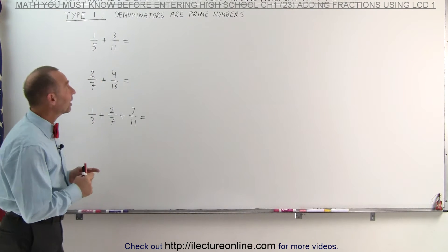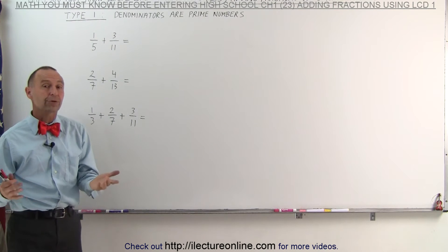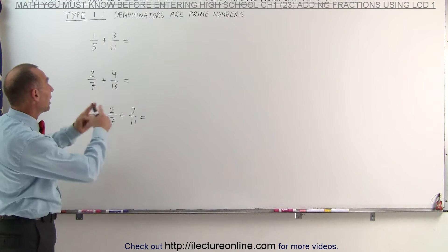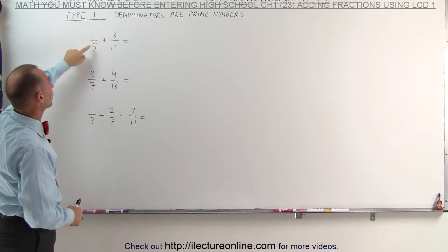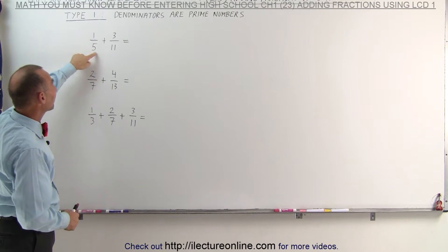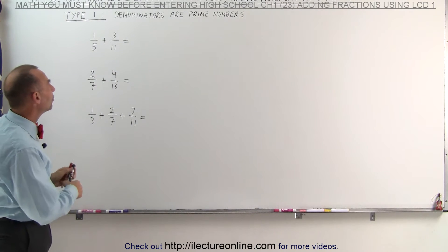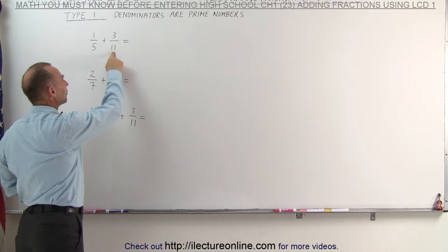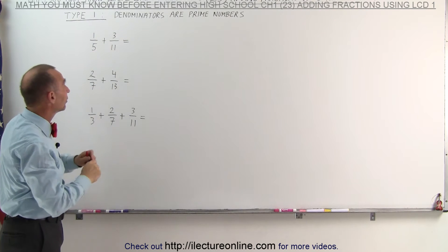In this first case here, you'll notice that all the denominators are prime numbers. Therefore, to find the lowest common denominator, we have to multiply the denominators together. For the first two fractions here, the lowest common denominator will be 5 times 11, which is 55. This means we must multiply the first fraction by the denominator of the second fraction, and the second fraction by the denominator of the first fraction.